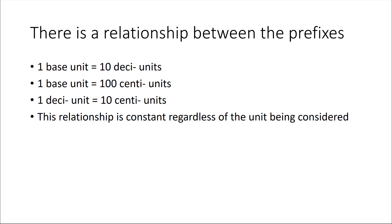There is a relationship between these prefixes. One base unit of measurement is equal to 10 deci units, and one base unit is equal to 100 centi units. But there's also a direct relationship between deci and centi: for each deci unit you have, that equals 10 centi units. This relationship is constant regardless of which unit is being considered.